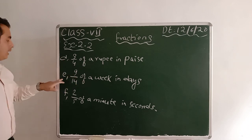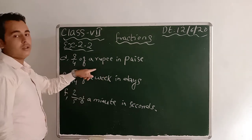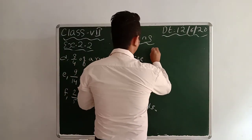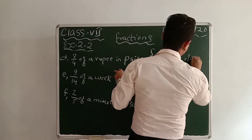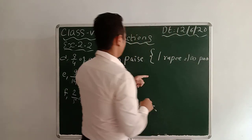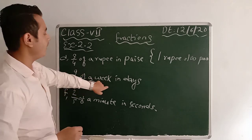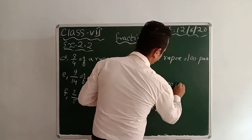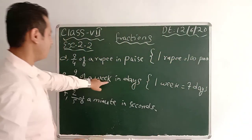There are 3 more questions: D, E, and F. A, B, and C I did, so D, E, and F you should do at home. I'll give you hints. D: 3/4 of a rupee in paise — use the hint that 1 rupee equals 100 paise. E: 9/14 of a week in days — 1 week equals 7 days.